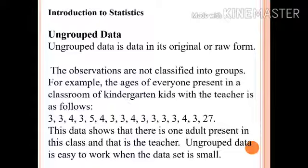For example, the ages of everyone present in a classroom of kindergarten kids with the teacher is as follows: 3, 3, 4, 3, 5, 4, 3, 3, 4, 3, 3, 3, 3, 4, 3, 27. This data shows that there is one adult present in the class, age 27, and that is the teacher.